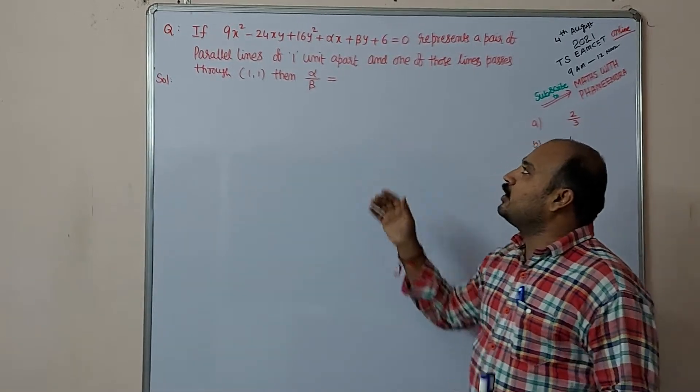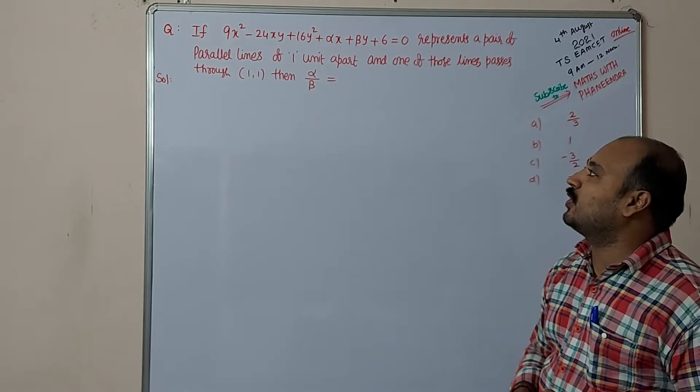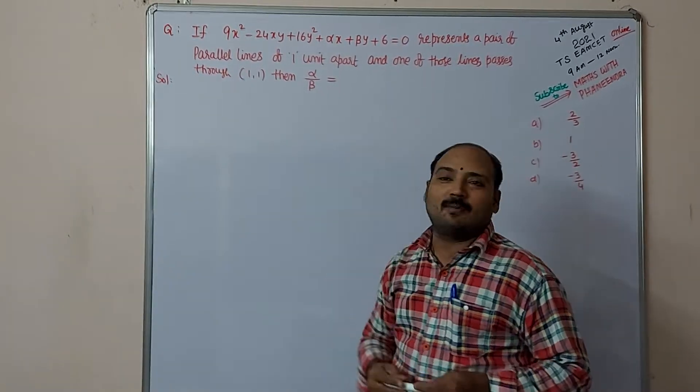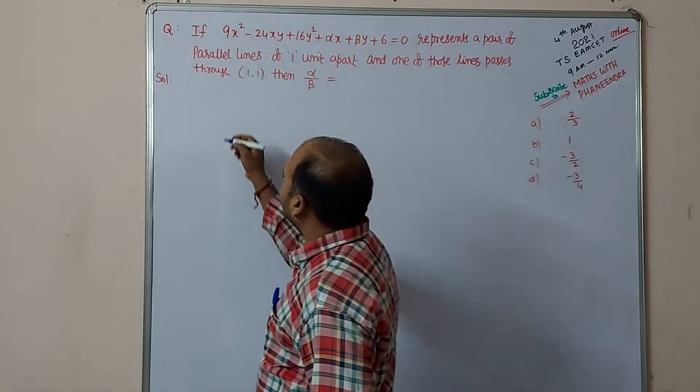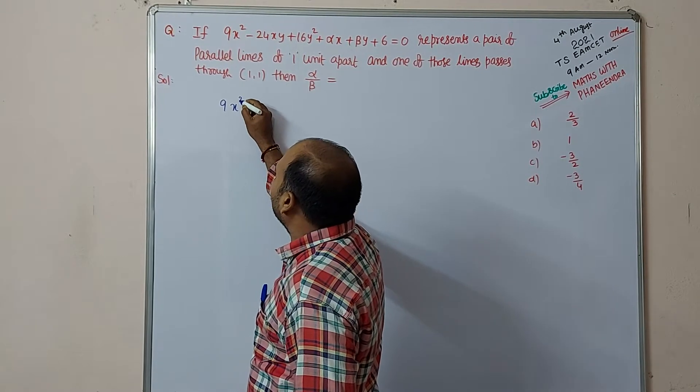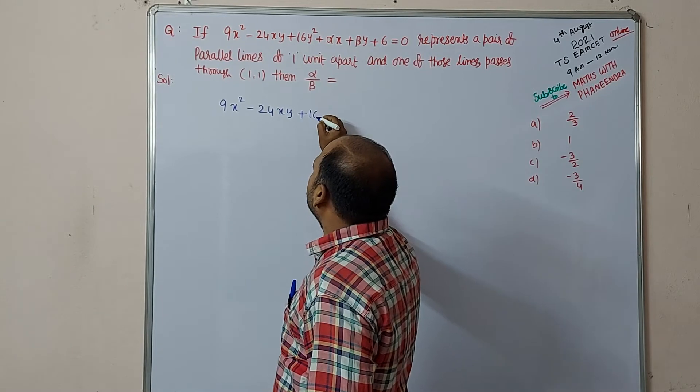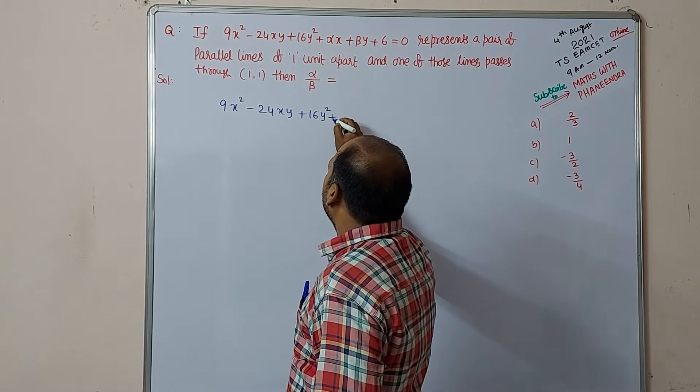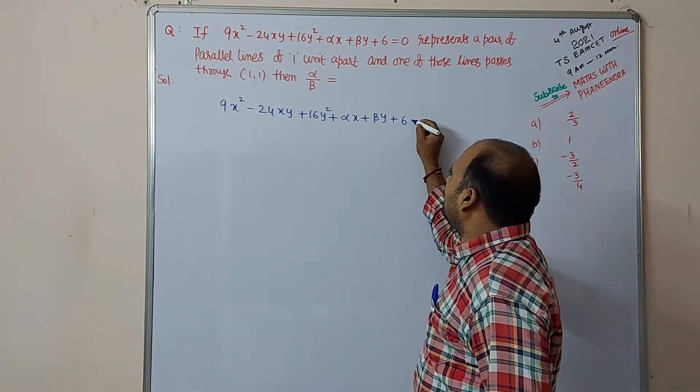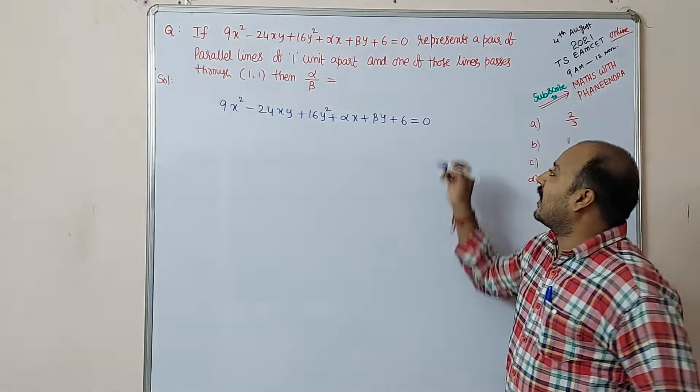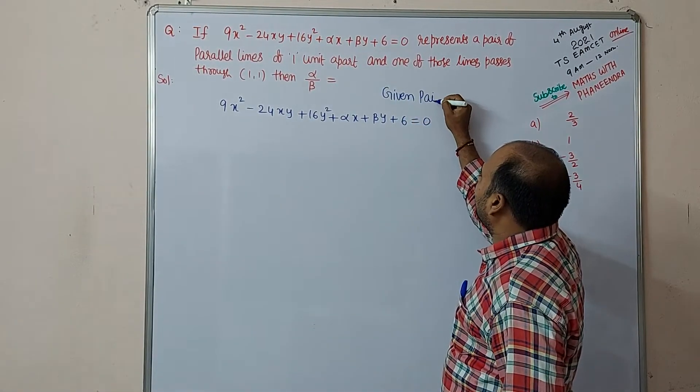So here the given pair of lines is 9x² - 24xy + 16y² + αx + βy + 6 = 0. These are the given pair of parallel lines.